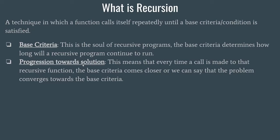The second property is progression towards solution. When we studied about algorithms, there was a statement which said that every algorithm should always progress towards solving the problem. Similarly, after every recursive call, our problem comes closer to the base criteria — our problem converges towards the solution. It should not go away from the base criteria; if it does, the recursive call is going in the wrong way.